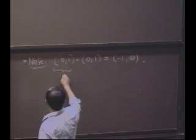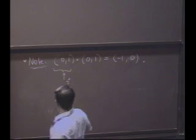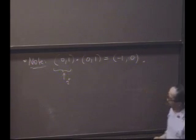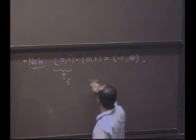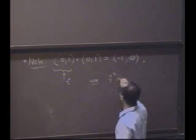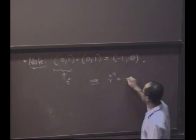If I call this creature I, you can't stop me from doing that, then what I see is that I squared is, if you like, minus 1.